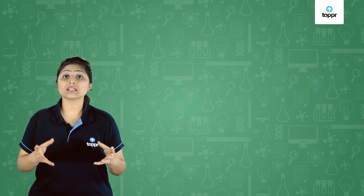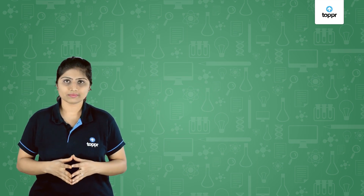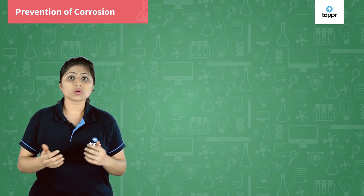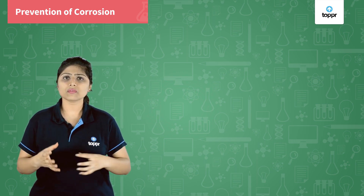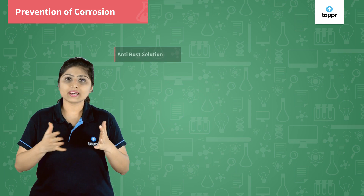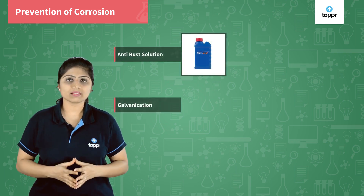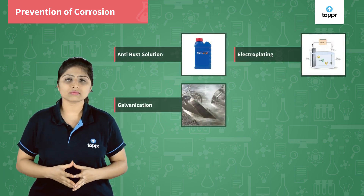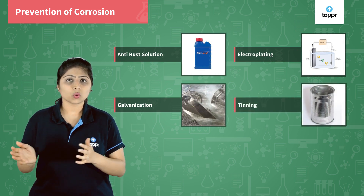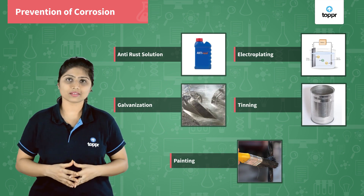Every year an enormous amount of money is spent to replace damaged iron. There are various prevention methods that can be undertaken to prevent corrosion, such as using anti-rust solution, galvanizing, electroplating, tinning, and coating the surface of metal with paint, among many other methods.